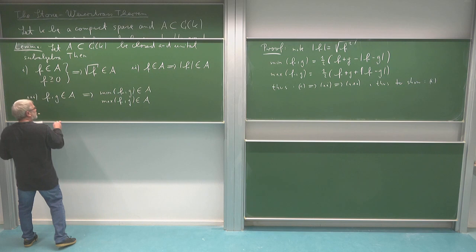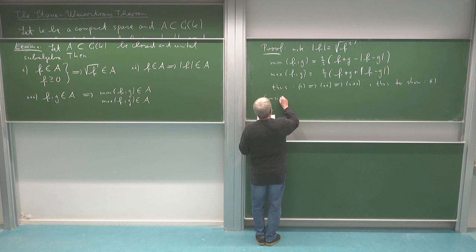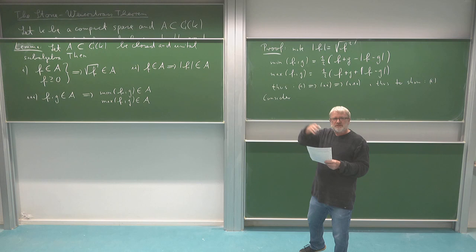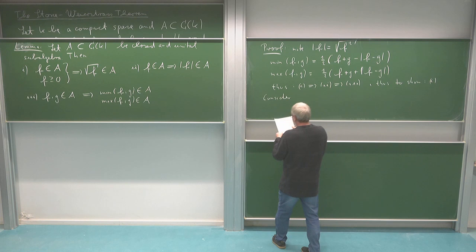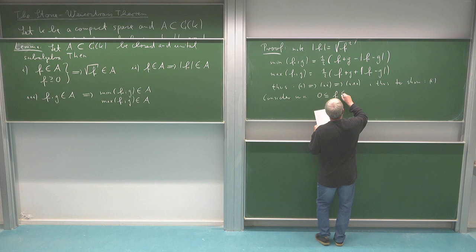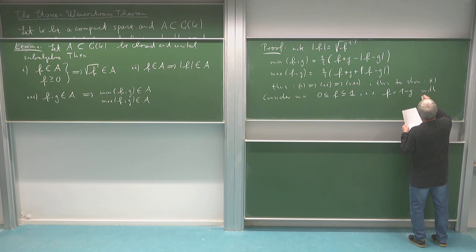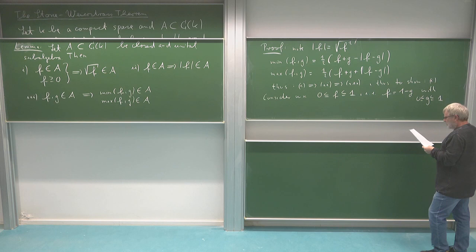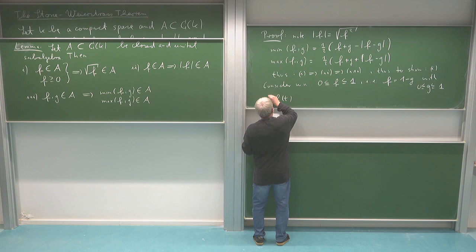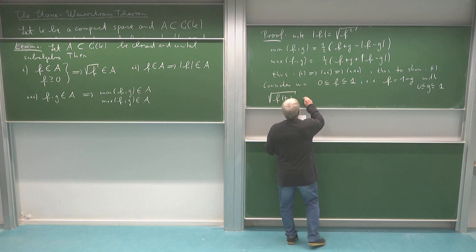Without restriction, I can assume that my F satisfies 0 < F ≤ 1, because it's bounded and I can rescale it to fall into [0,1]. Then I can write F as one minus G, where G is also between zero and one — I just define G as one minus F. And then I'm looking at the square root of F(t), which is the square root of one minus G(t).